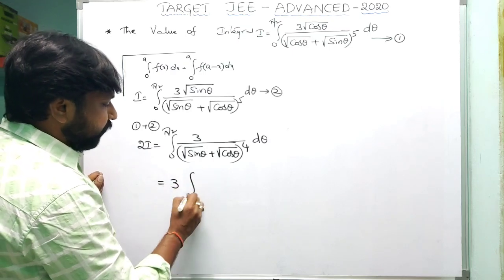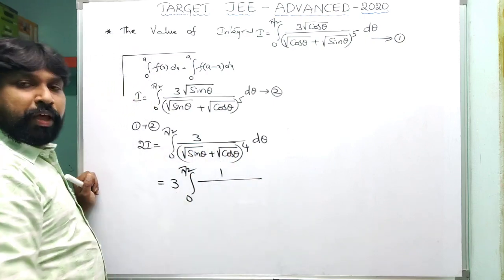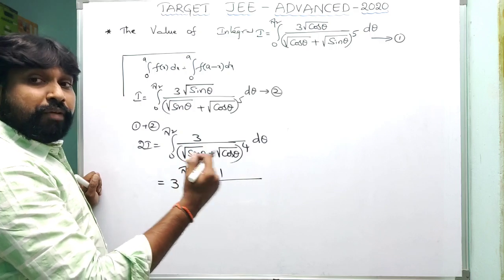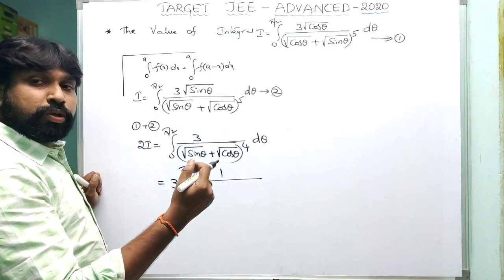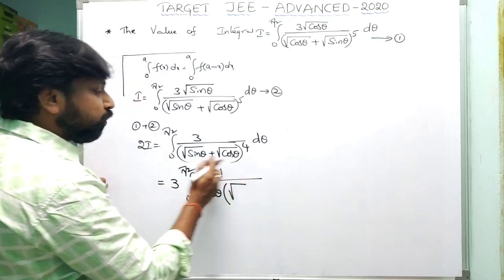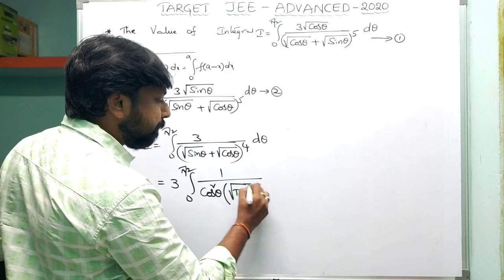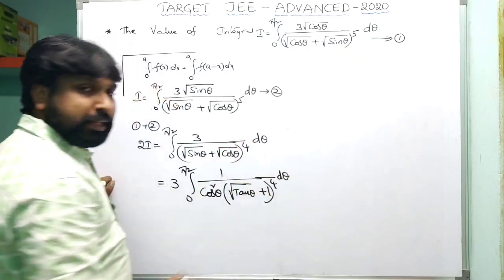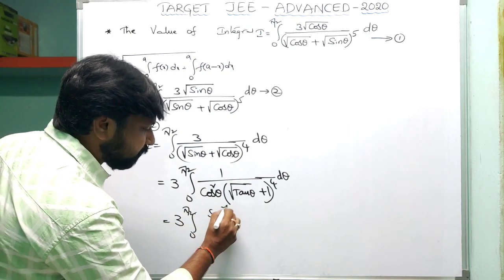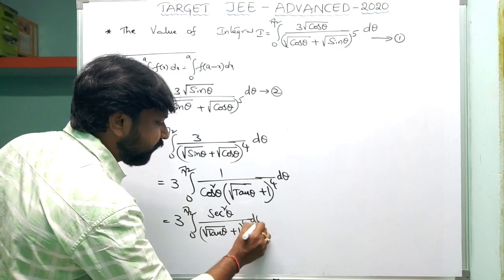Now evaluate: 3 times integral from 0 to π/2 of 1/(∛cosθ + ∛sinθ)⁴ dθ. Take ∛cosθ as common from denominator — ∛cosθ to the power 4 comes out as cos²θ. Dividing inside by ∛cosθ gives (∛tanθ + 1)⁴. The expression becomes 3 times integral from 0 to π/2 of sec²θ / (∛tanθ + 1)⁴ dθ.